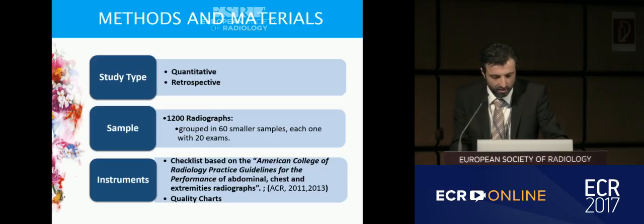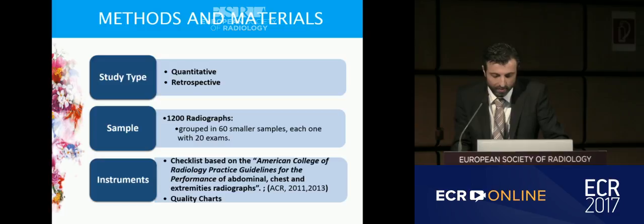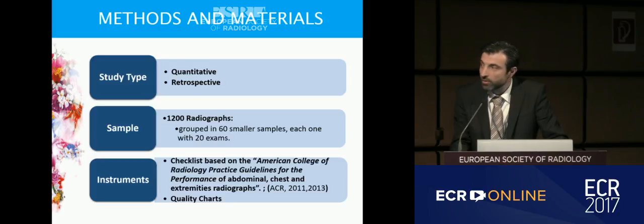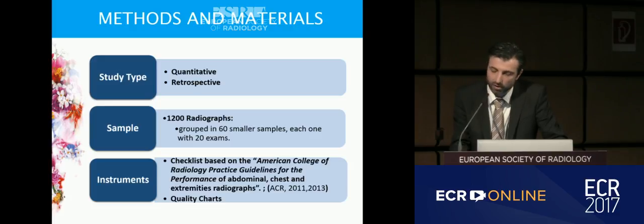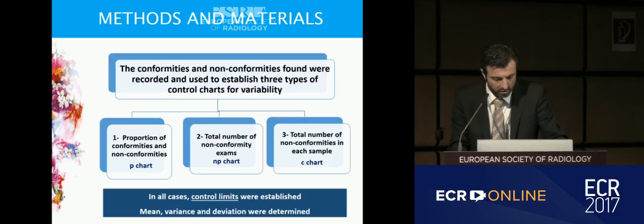The type of study was quantitative and retrospective. Our sample was 1,200 radiographs grouped in 60 smaller samples, each one with 20 exams. Our instruments were a checklist based on the American College of Radiology practice guidelines for the performance of abdominal, chest and extremities radiographs, and quality charts.